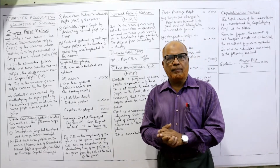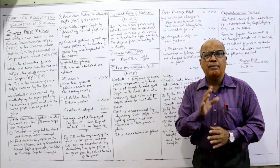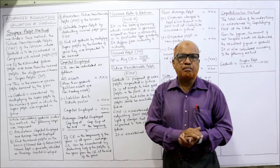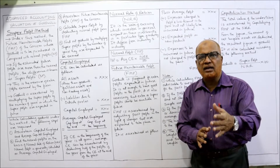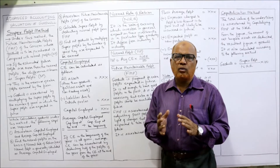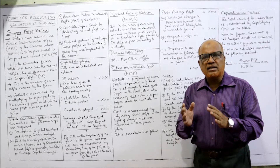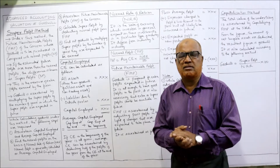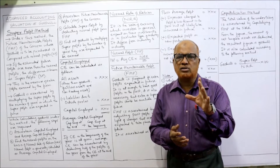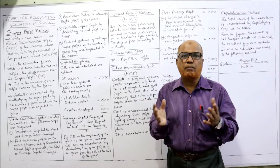The first method, average profit method, I already explained in the last video. It is very simple — take the average profit of the past few years and multiply by the number of years of purchase, meaning how many years we can expect that past average profit to continue in the future. Now the second very important method is super profit method, and the last one is capitalization method. These two methods I am going to explain in this video, so watch till the end.